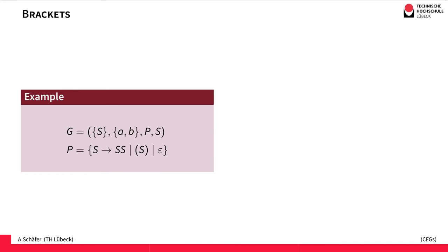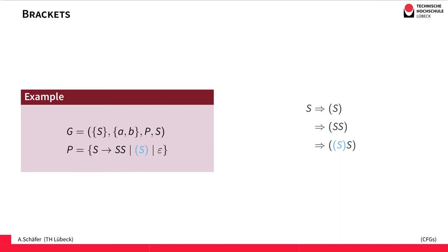Our next language is the language of the brackets, and this is a grammar for the brackets — we'll have a look at how it works. Again we start with the start symbol S. We choose to replace S by the second production that actually allows nesting of brackets. So we replace S by an open bracket, an S, and a closed bracket. Then we have to replace this S again, and we choose the second rule. The second rule replaces S by two instances of S, which allows us to put two brackets together — to concatenate two bracket expressions. This one is for concatenation.